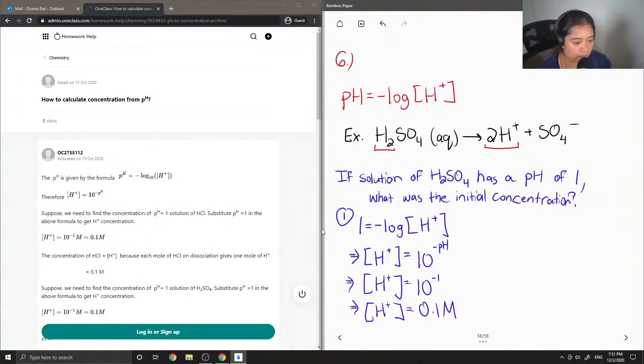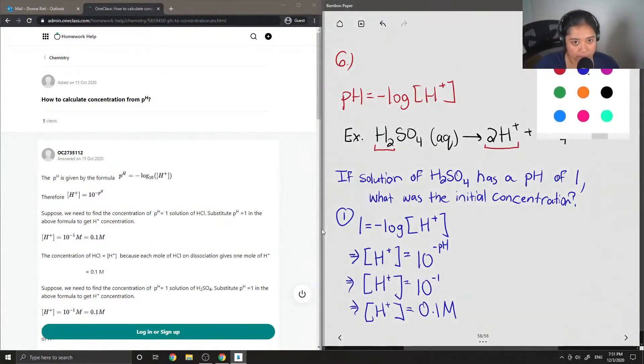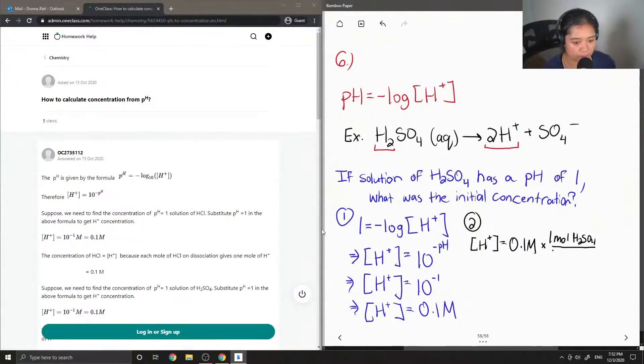So, now that we know the concentration of H+, we can find the initial concentration of sulfuric acid. I'm just going to rewrite this up here, equal to 0.1 moles per liter. So, this is why it's important to balance your chemical reaction because we can recall that 1 mole of H2SO4 produced 2 moles of H+.